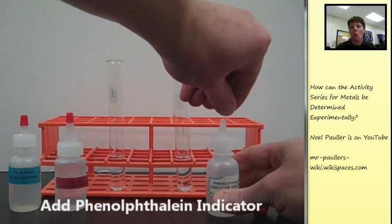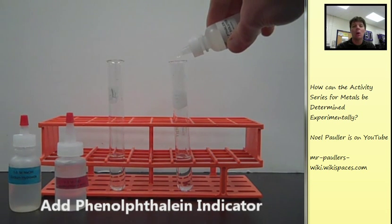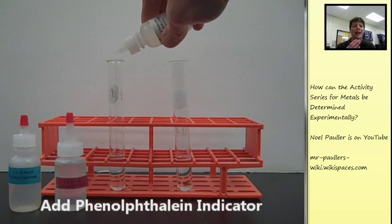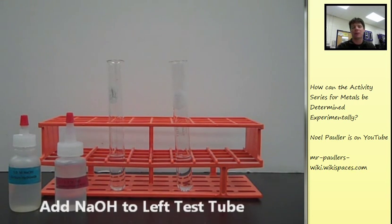We've already added some water to two different test tubes. Now we're adding some phenolphthalein indicator, which is going to let us know if we're looking at an acidic solution or a basic solution.